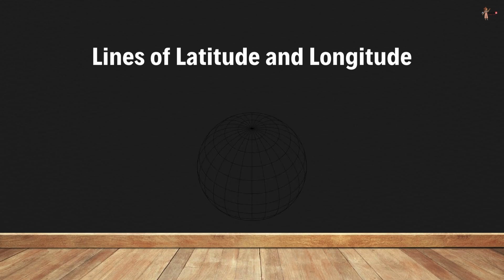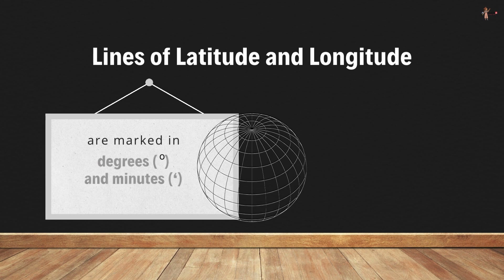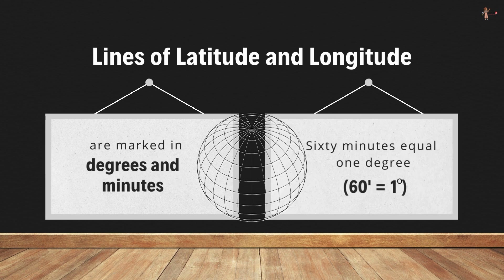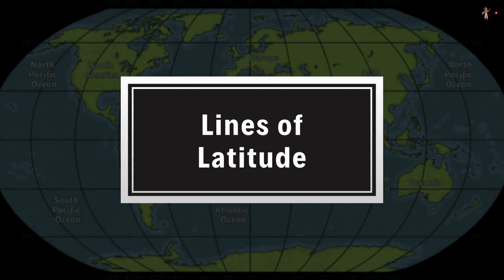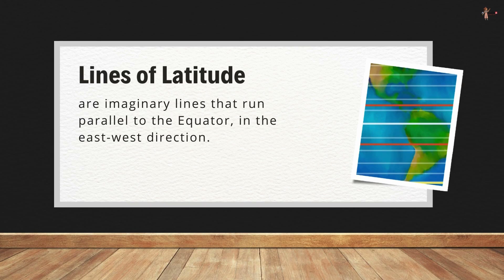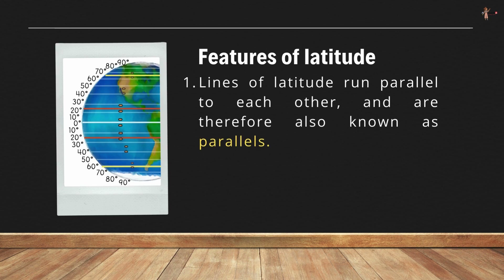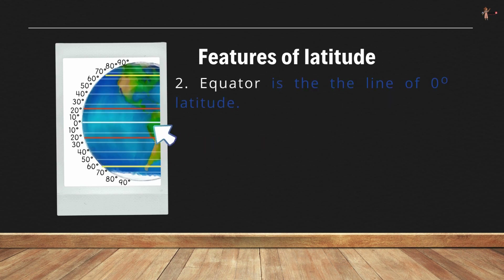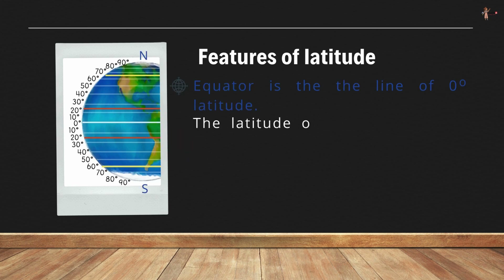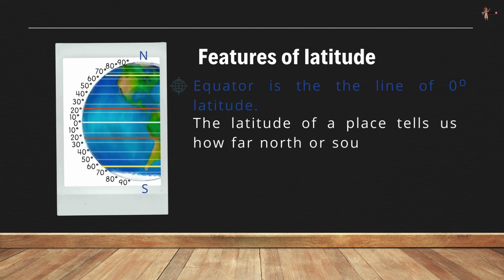Lines of latitude and longitude are marked in degrees and minutes — 60 minutes equal 1 degree. Lines of latitude are imaginary lines that run parallel to the equator in the east-west direction. Lines of latitude run parallel to each other and are therefore known as parallels. The equator is the line of zero degrees latitude.